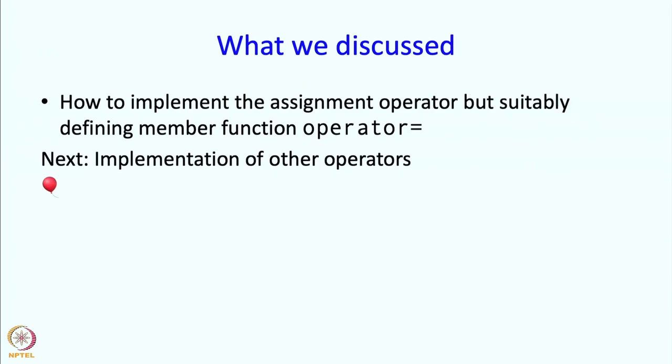So what have we discussed? We have discussed how to implement the assignment operator by suitably defining member function operator equal to. We defined two member functions: one which takes const char star as argument, and another which takes a const string reference. In the next segment we will talk about the implementation of the other operators, but before that we will take a quick break. Thank you.